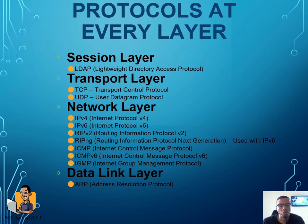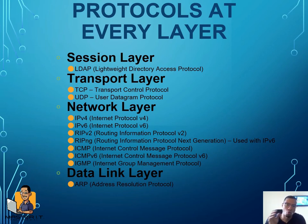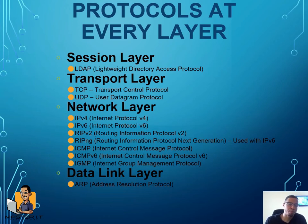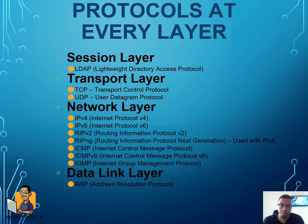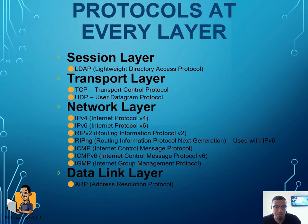Layer four is the transport layer. There are two different ways we can transport information: TCP or UDP. TCP is connection-oriented; UDP is connectionless. TCP cares if the receiver actually receives whatever you sent. UDP doesn't — you send it, and if they get it, great; if they don't, oh well. So UDP is a lot faster, but it's not as reliable.